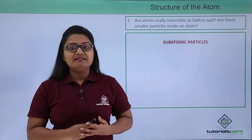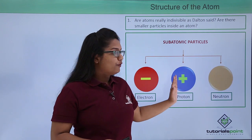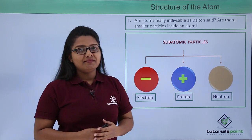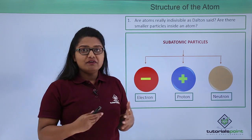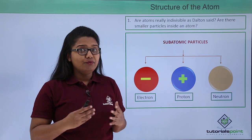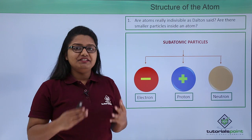Now these subatomic particles are of three kinds: electrons, protons, and neutrons. Electrons are negatively charged, protons are positively charged, and the neutrons have no charge or we can say that neutrons are electrically neutral.